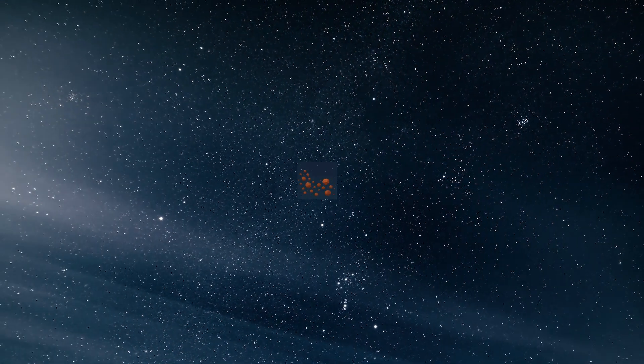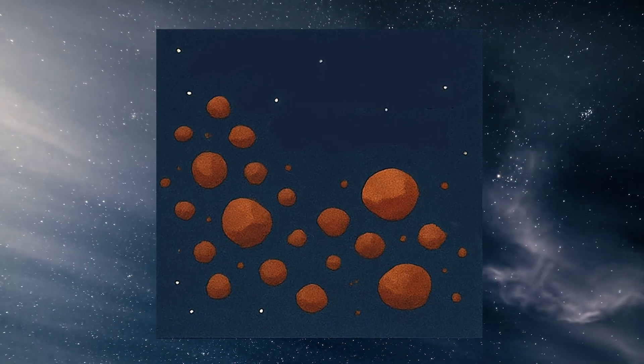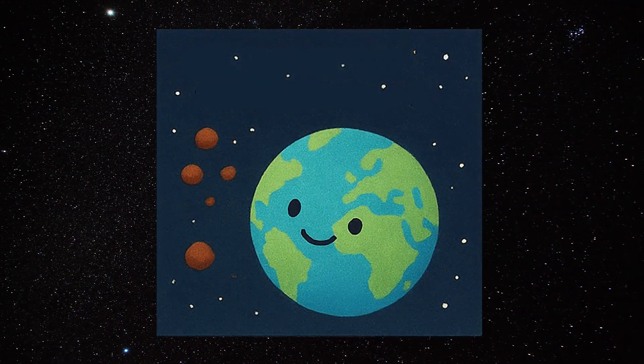Rocks and dust came together. The leftover dust and rocks started sticking together like a big snowball in space. These were the first pieces of Earth.